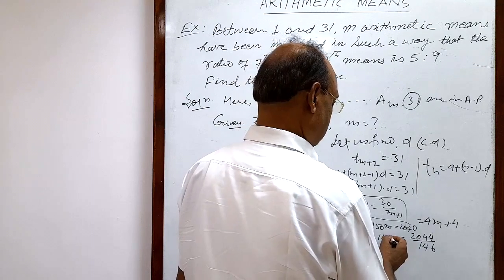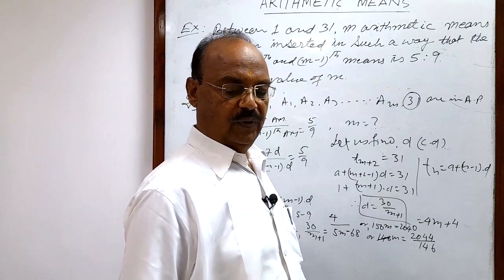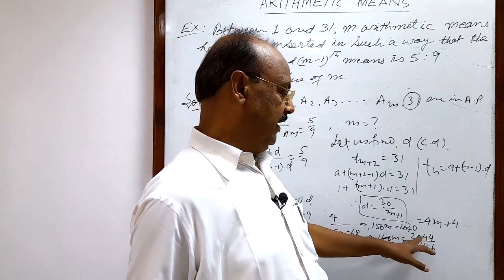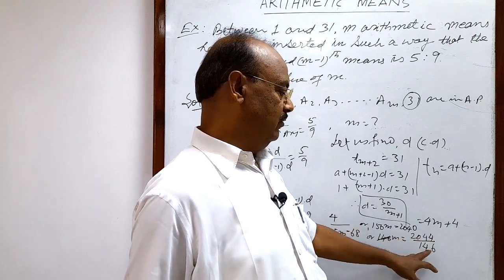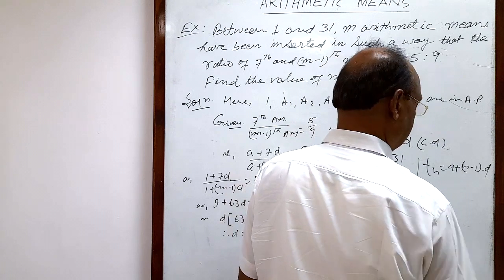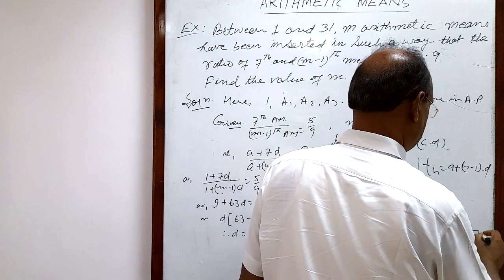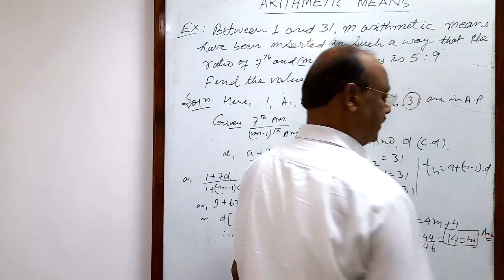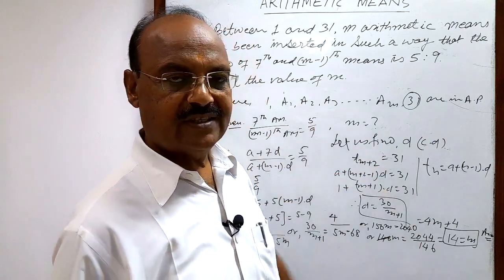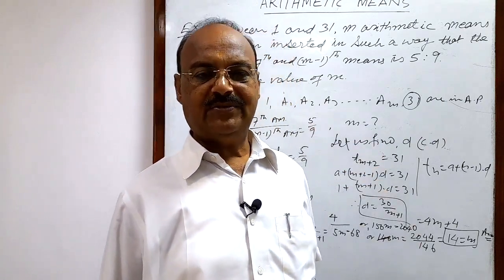So, simplifying: m = 2044 / 146 = 14. This is the value of m and this is the answer. In this way we can solve these questions very easily. Hope you have understood it very well. Thank you very much for watching this video.